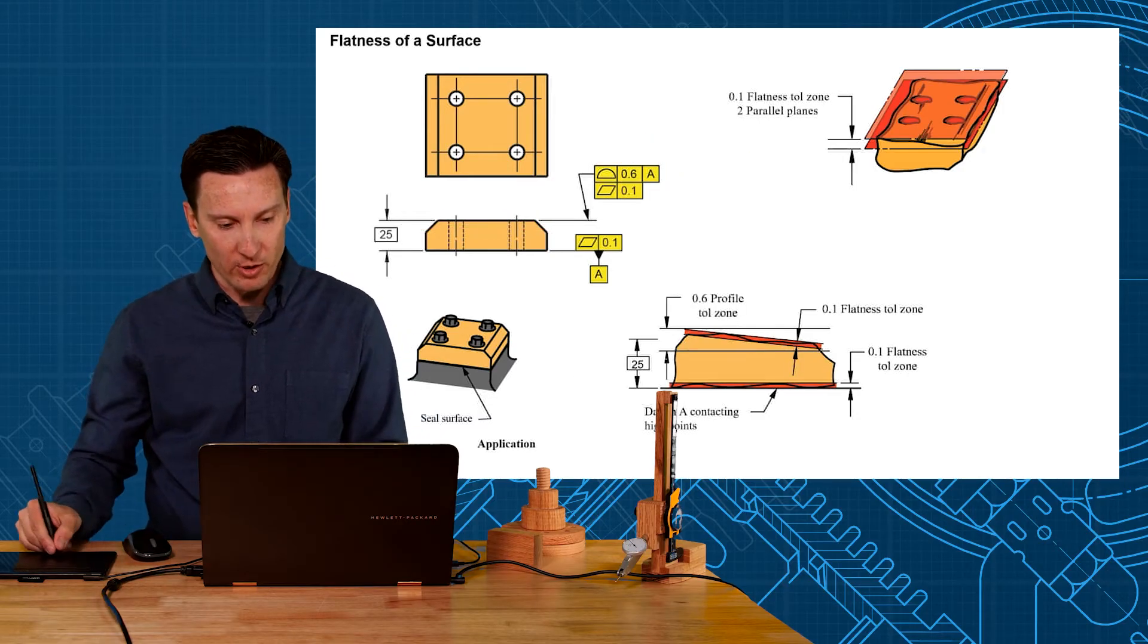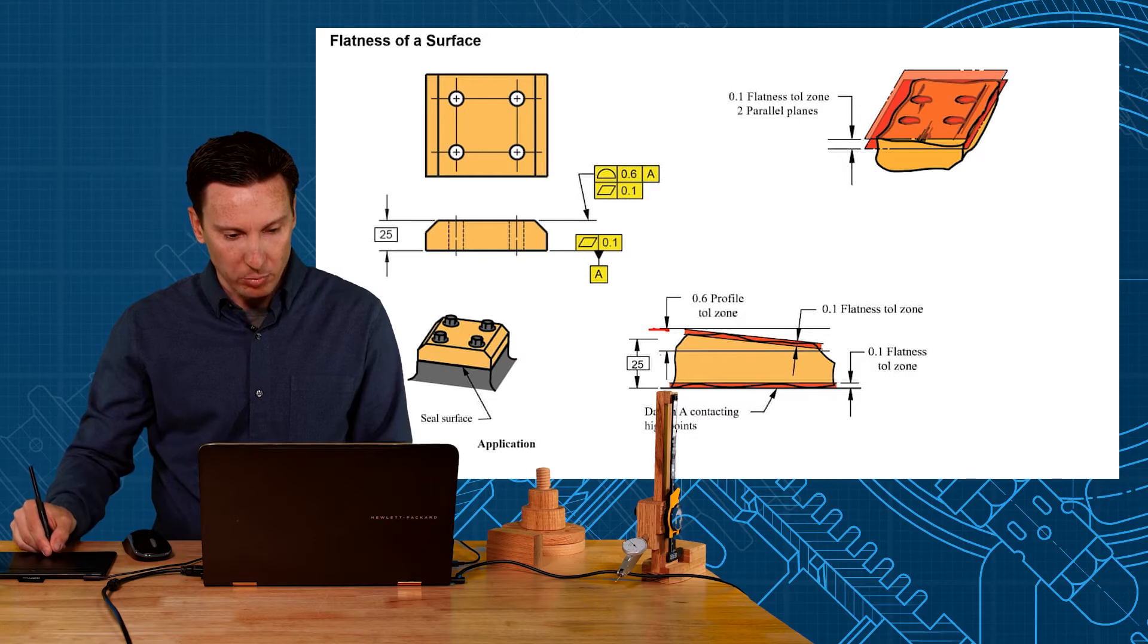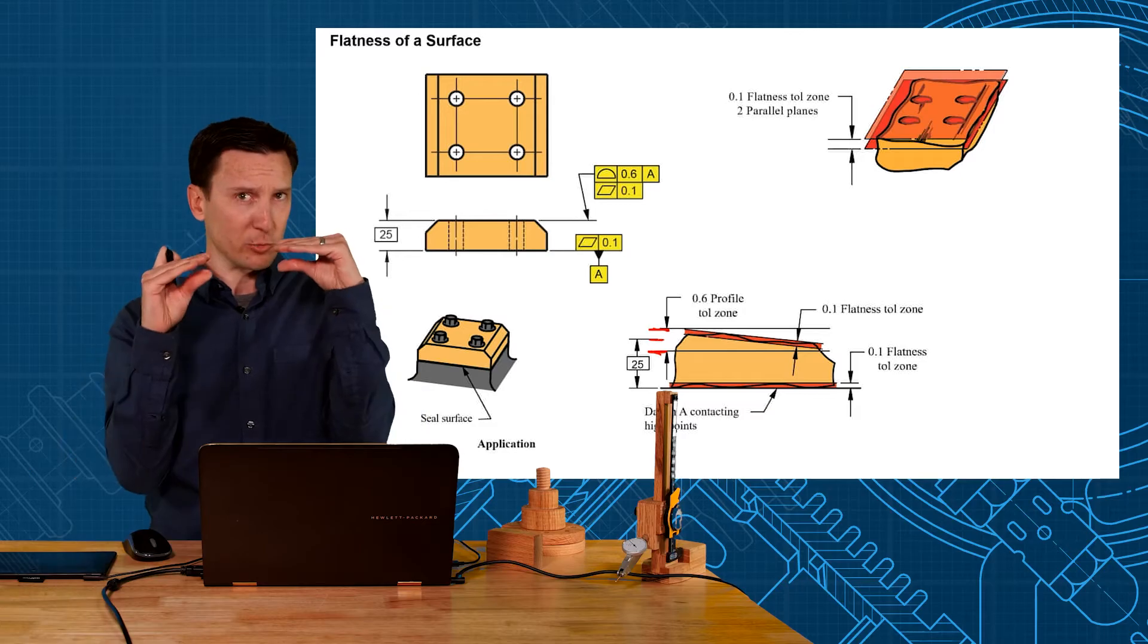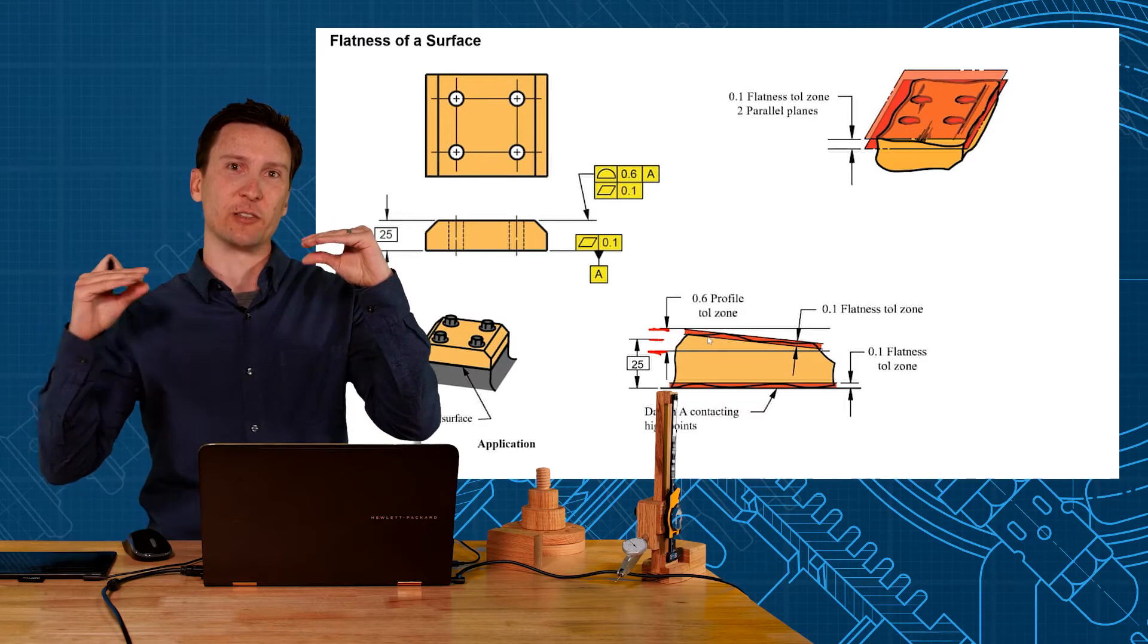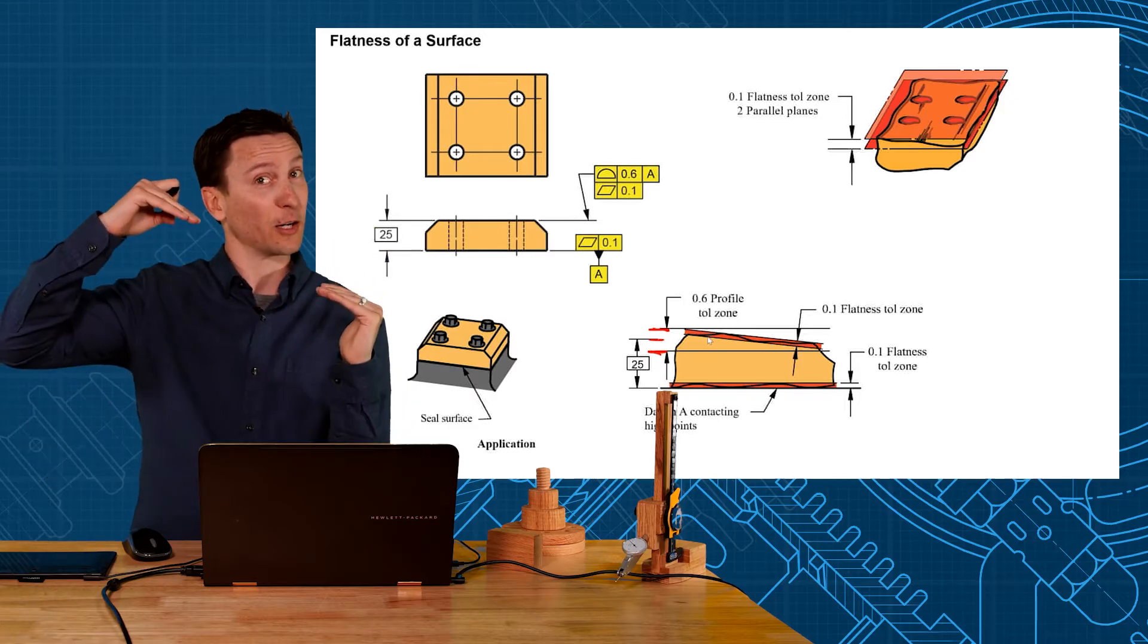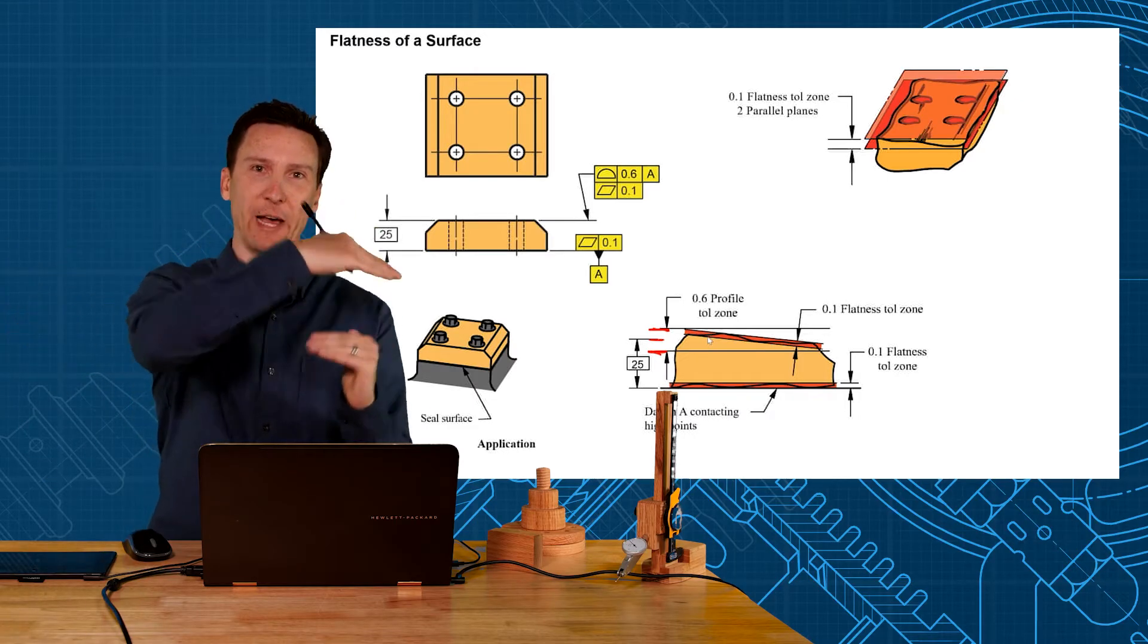So that will create a refinement. Your profile zone is spec'd out as the plus or minus 0.3 centered around your 25 basic but the flatness tolerance has no datum so it's going to be a best fit refinement of that surface. Cut it high, cut it low, or cut it crooked. Just don't cut it out of flat.